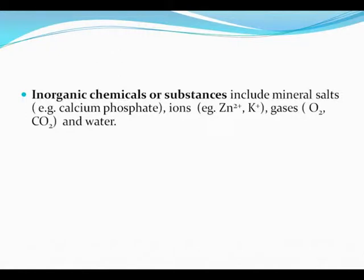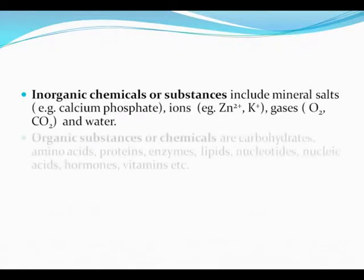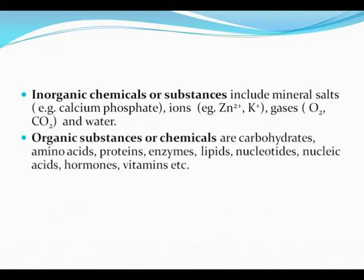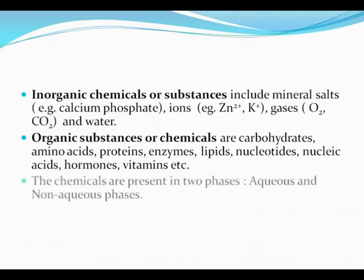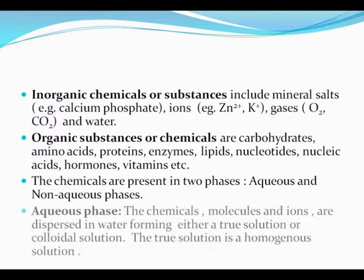Inorganic chemicals or substances include mineral salts like calcium phosphate, ions of zinc and potassium, gases such as oxygen and carbon dioxide, and water. The organic substances or chemicals are carbohydrates, amino acids, proteins, enzymes, lipids, nucleotides, nucleic acids, hormones, and vitamins. The chemicals are present in two phases: the aqueous and the non-aqueous phase.